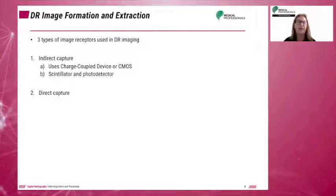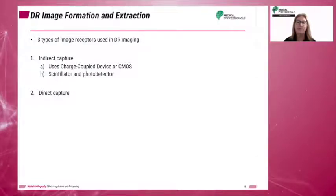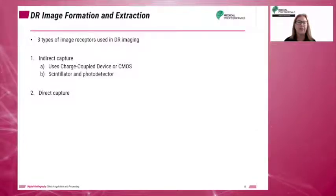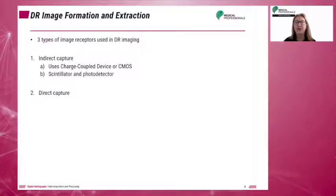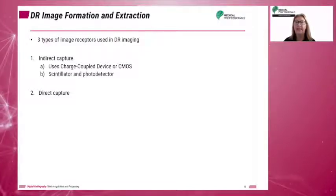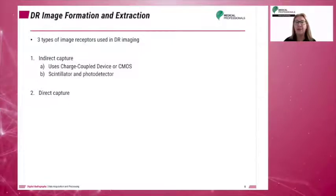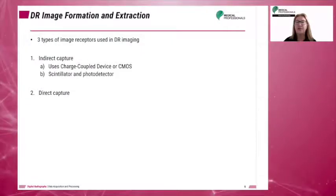There are three types of image receptors used during DR imaging. Digital systems can be divided into two broad categories — indirect and direct — which are based on the method used to capture the image.